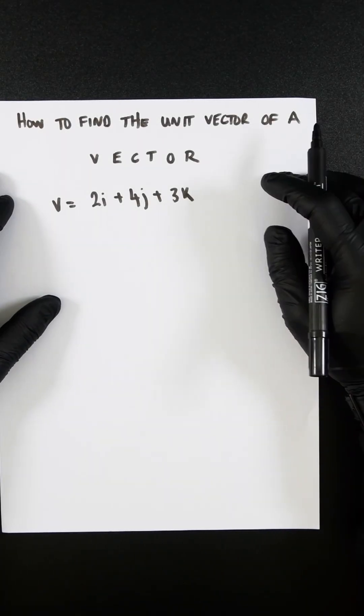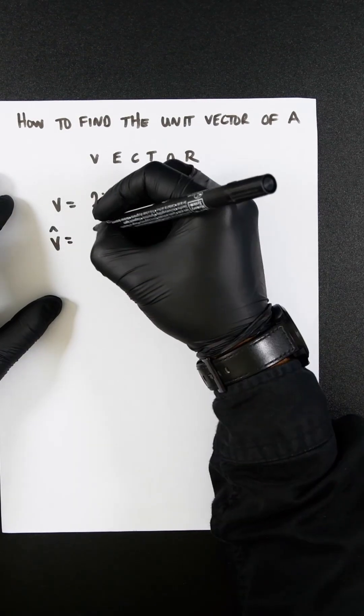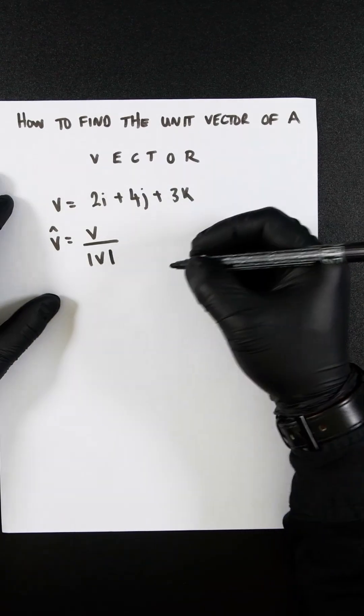A quick and easy video of how to find the unit vector of a vector. The unit vector would equal the vector itself divided by the magnitude of the vector.